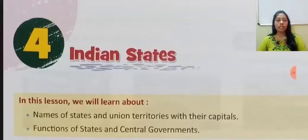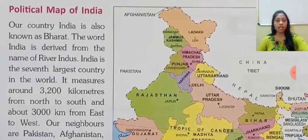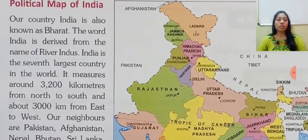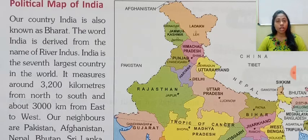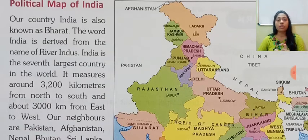Hello students, today we will be starting with Chapter 4: Indian States, Class 3rd. Our country India is also known as Bharat. The word India is derived from the name of the river Indus. Yeh ek river hai Indus. Us river ke naam se humari country ka naam India nikal kar aya hai.